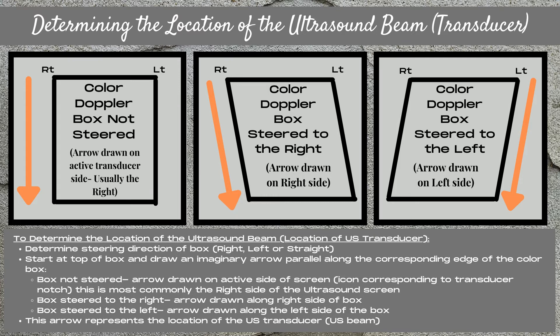If your color box is not steered, then the arrow — which represents the ultrasound beam and your transducer — should be drawn on the active side of the screen. Usually this is the right side of the screen, but can be determined by where your icon or active side screen indicator is located. For a color box steered to the right, the arrow is drawn on the right side, and for a color box steered to the left, the arrow is drawn on the left side.